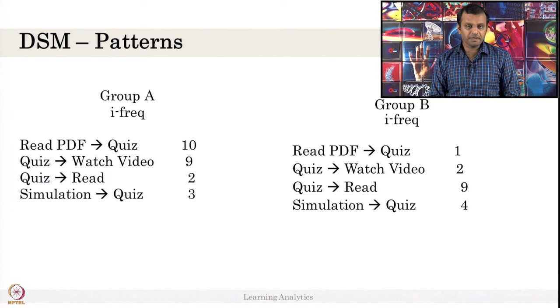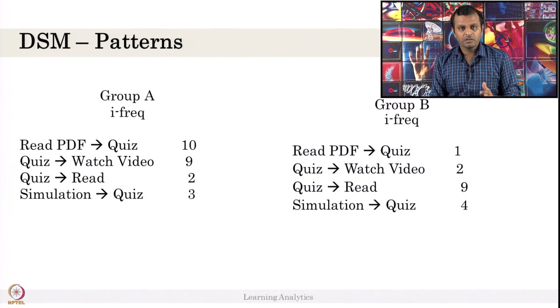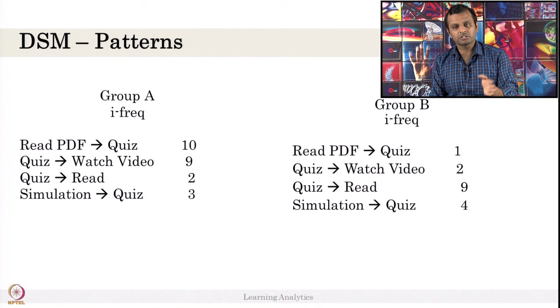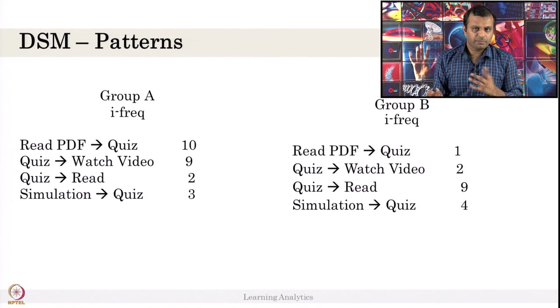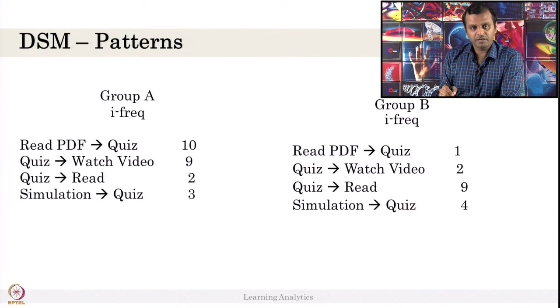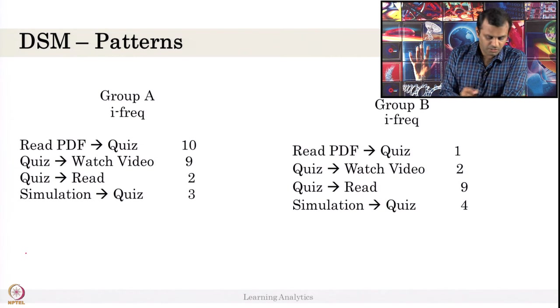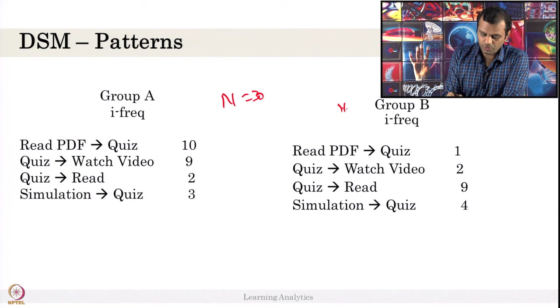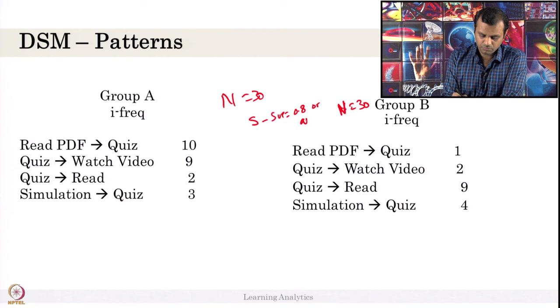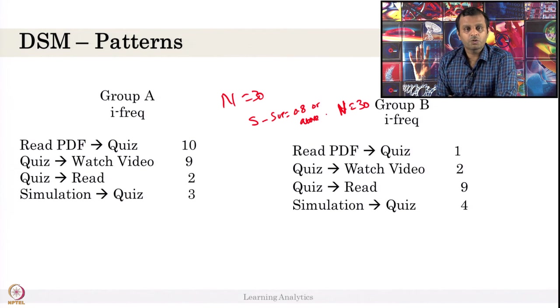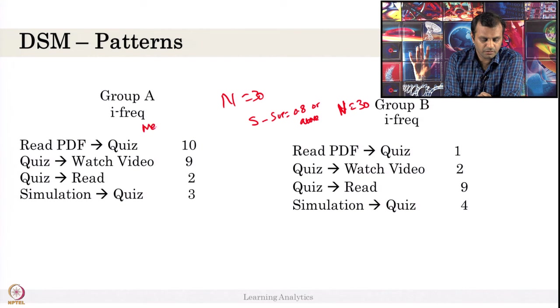Group A did Read PDF to Quiz 10 times - consider this is high frequency median. And imagine the support is equivalent, say 0.8 for both. The n is not important here - consider the n is also equivalent, say 30-30 or something like that, and support is 0.8. Consider the n is 30 in both and the support is 0.8 or above.